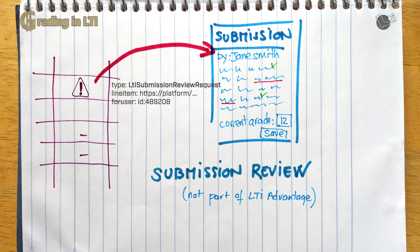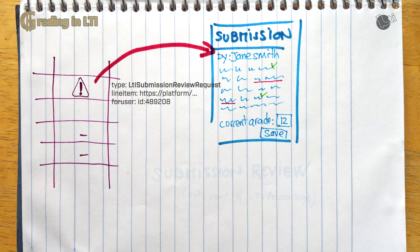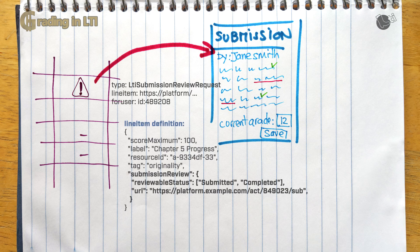So I say submission but that's really need to be understood very loosely. It really is up to the tool to decide what is relevant to be shown. Maybe a video recording, some statistics or whatever the tool captured about the user works on that activity. So how do you enable it? Well, this would be done at the line item level. So when you create your line item, you say this specific instance of a line item supports submission review launches. And you may even get a specific URL for it.